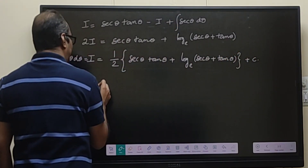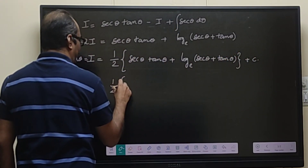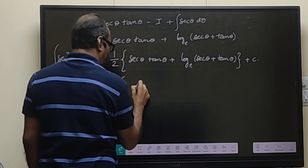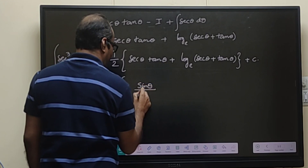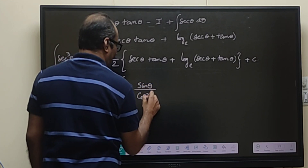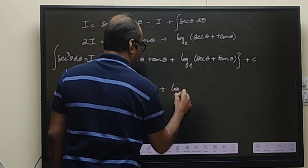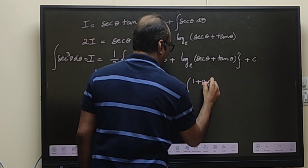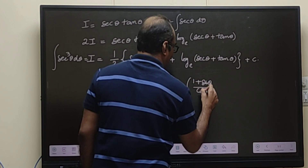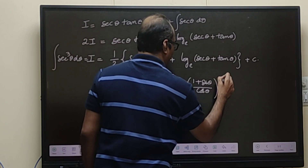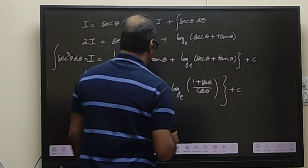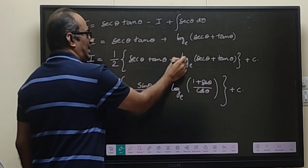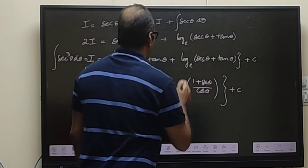We can also convert this into sin and cos. Writing secant theta as 1 over cos theta and tan theta as sin theta over cos theta, we get one-half of sin theta over cos square theta, plus logarithm of 1 plus sin theta divided by cos theta, plus C. So the integral of secant cube theta equals one-half of secant theta tan theta plus logarithm of secant theta plus tan theta, plus C.